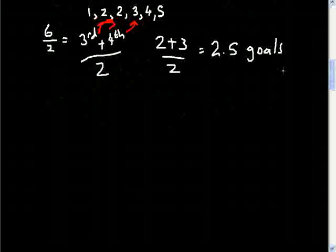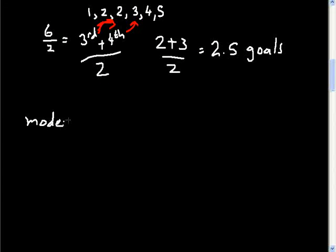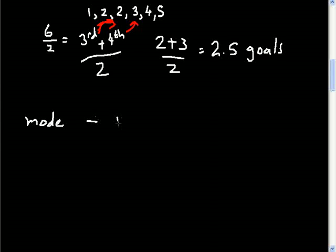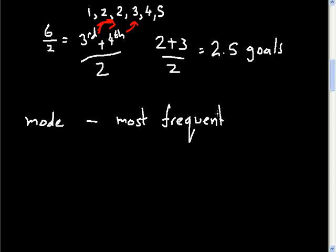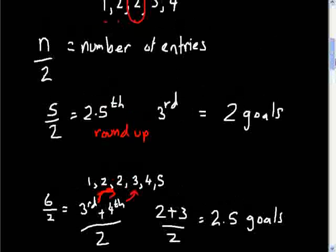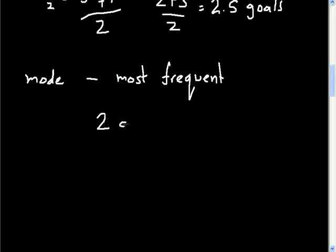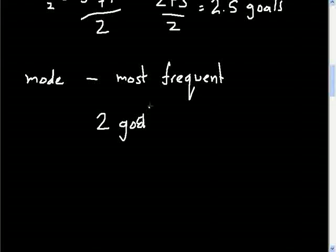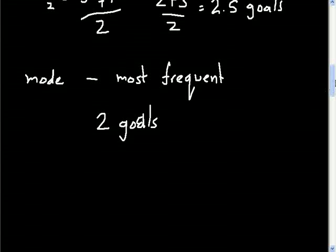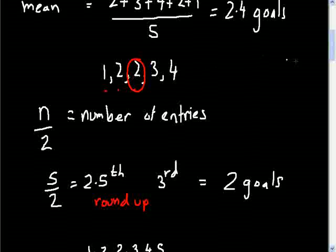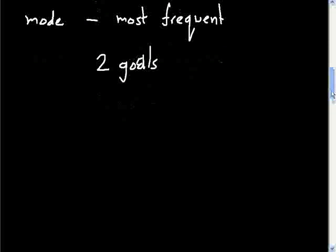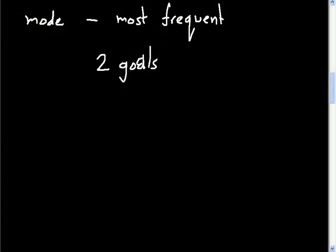The mode is the most frequent entry. In the data set with five games, the most frequent value is two, because two goals were scored in two games. So the mode is two goals.